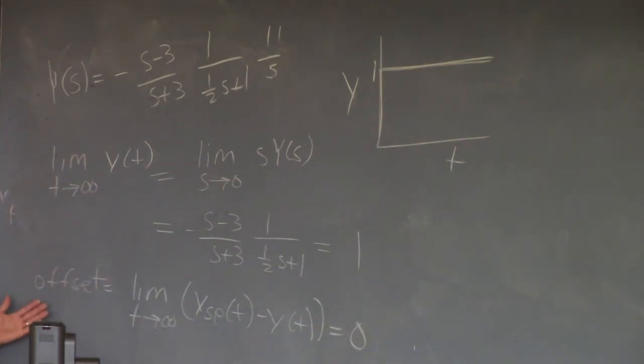All that means is the controller has integral action. The controller is designed to eliminate offset, so this is not a surprising result, even though I asked you to find it. OK? OK, good.